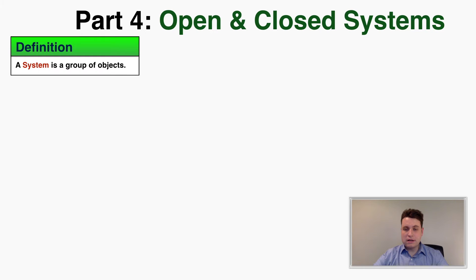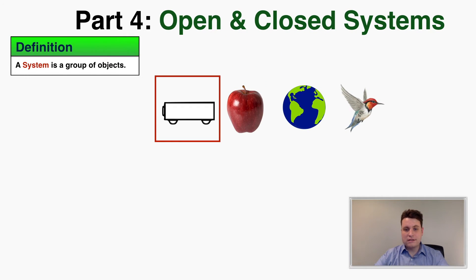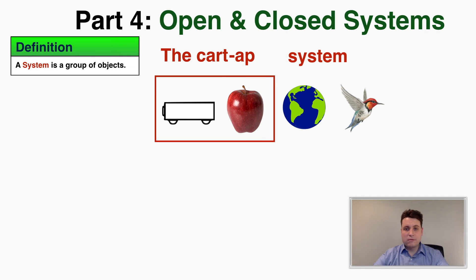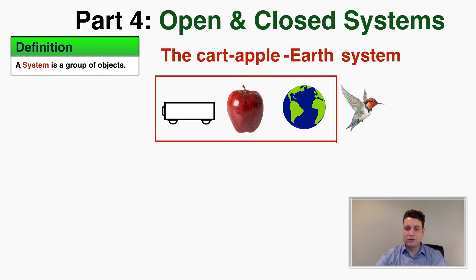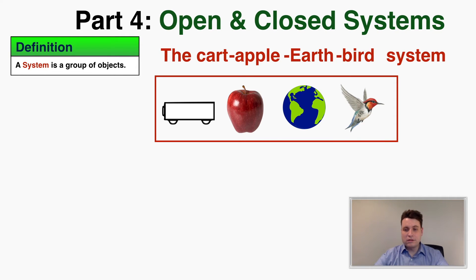These examples were meant to build you up to the idea of a system and the idea of open and closed systems — that's the theme of this lecture. A system is just a group of objects, that's literally all that it is. So I can circle a cart and say this cart is in my system, then expand my system to include an apple, making it the cart-apple system, then the cart-apple-earth system, then the cart-apple-earth-bird system. What a system is is incredibly simple: it's just whatever group of objects you want to examine.